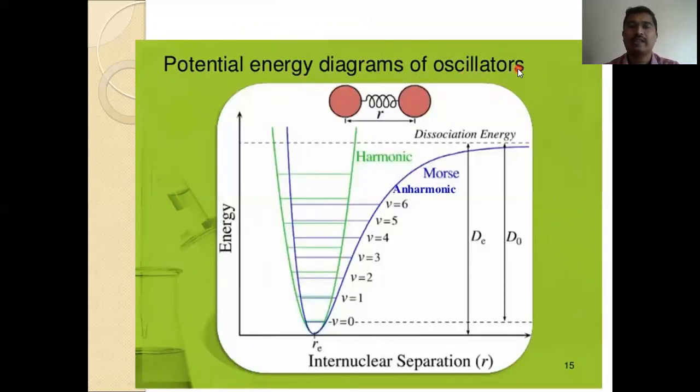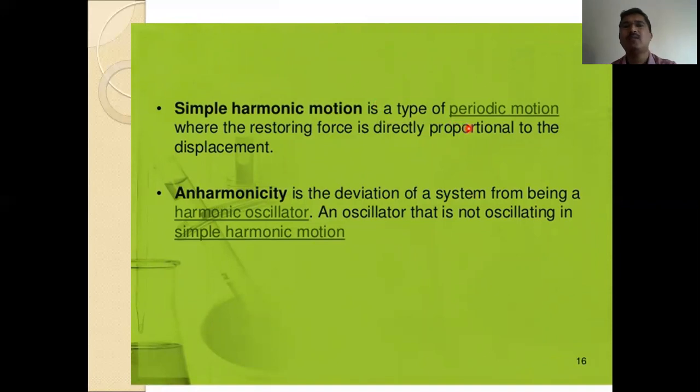Potential energy diagram of the oscillator. You can see here oscillator. For example here, two atoms are present here in between, radius or distance between two atoms. That is the stretching. On the y-axis energy, the x-axis is inter-nuclear separation. Now we can see here these vibrational levels. V denoted as vibrational levels is equal to 0, 1, 2, 3, 4, like stretching. That is the harmonic oscillations. Here, de and d0, that is the distance. Simple harmonic motion is a type of periodic motion when the restoring force is directly proportional to the displacement. Anharmonicity is the deviation of the system from being a harmonic oscillator in oscillation that is not oscillating in simple harmonic motion.